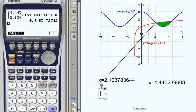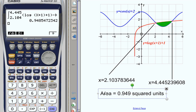So we get that the area is equal to 0.949, to three significant figures, squared units. So that's how we use our graphics display calculator to calculate the area between two curves, where we can't do it algebraically.